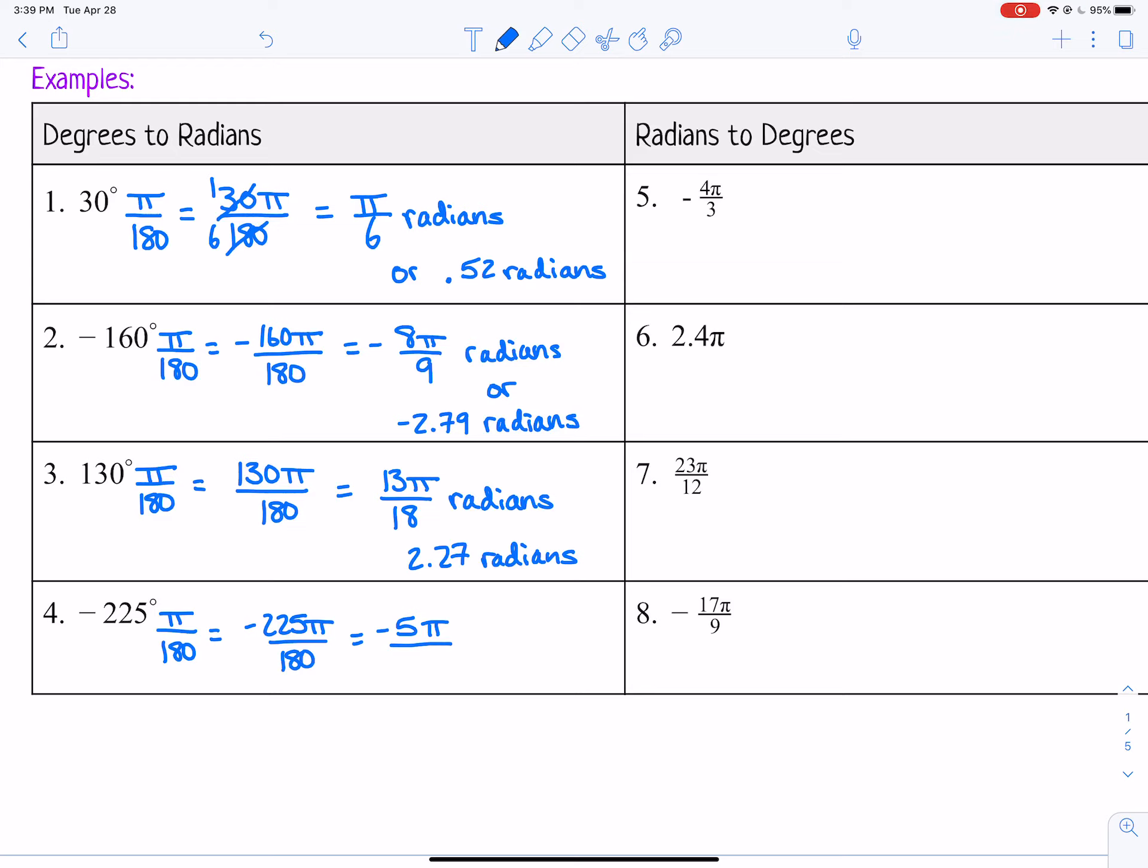So negative 5 pi over 4, or if asked, we could round it, and that would be negative 3.93 radians.